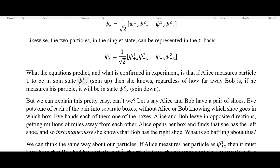So what the equations predict, and what is confirmed in experiments, is that if Alice measures particle one to be spin state z-plus — the spin up state — then she knows, regardless of how far away Bob is, that if he measures his particle it will be in the spin down state.